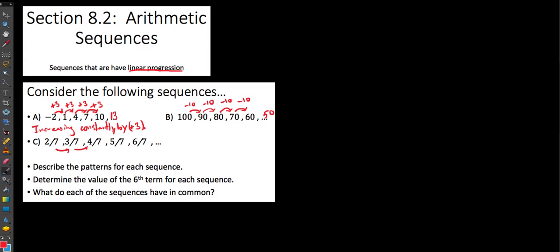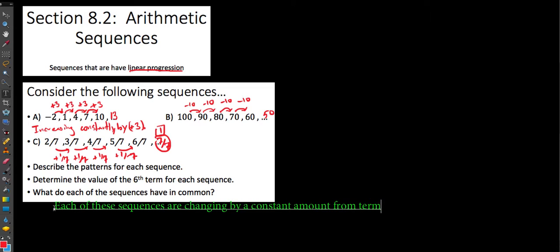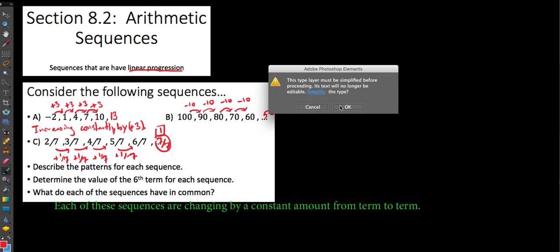In this last sequence, we have fractions from term to term, but it's increasing every time by one-seventh — plus one-seventh each time. So we see that these sequences are changing by a constant amount every time, adding or subtracting a set amount each time to get to the next consecutive term. In terms of what they have in common: each of these sequences are changing by a constant amount from term to term. When we see this type of pattern, these are the sequences we're going to refer to as arithmetic sequences.